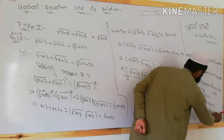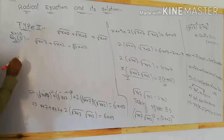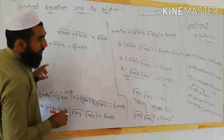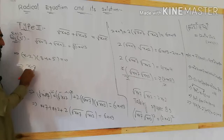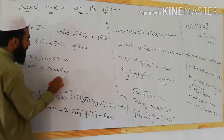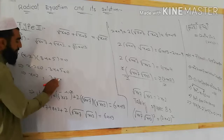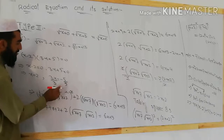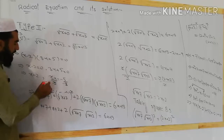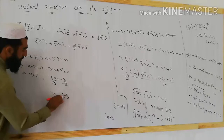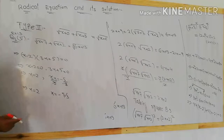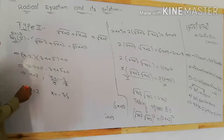Taking 3x common from the first two terms: 3x(x − 2), and 5 common from the last two terms: +5(x − 2) = 0. Taking (x − 2) common: (x − 2)(3x + 5) = 0. So x − 2 = 0 or 3x + 5 = 0, giving x = 2 or x = −5/3. These are the solutions of the given equation.